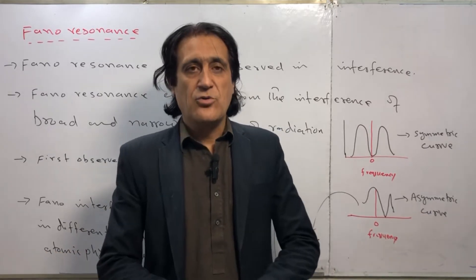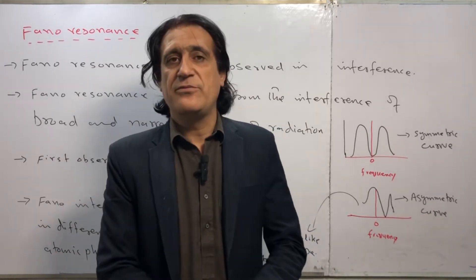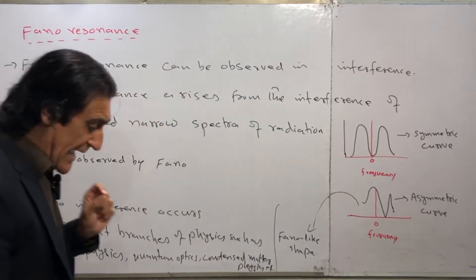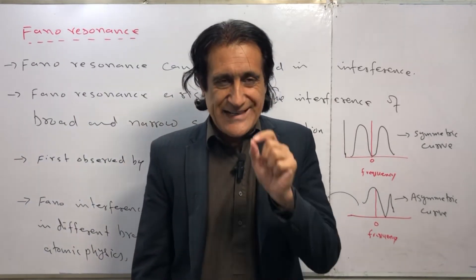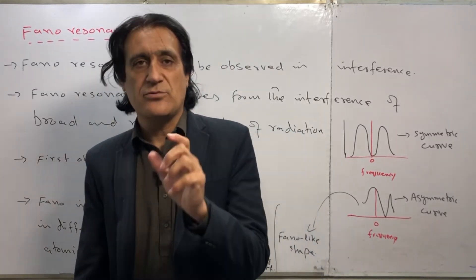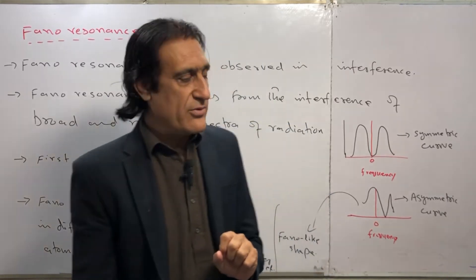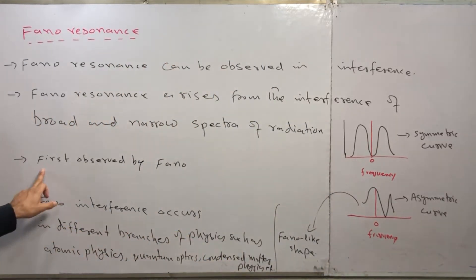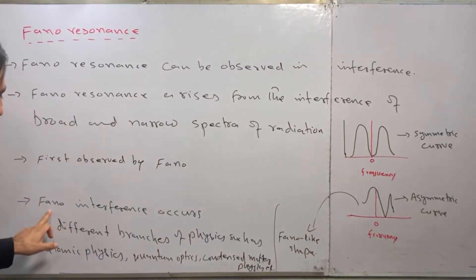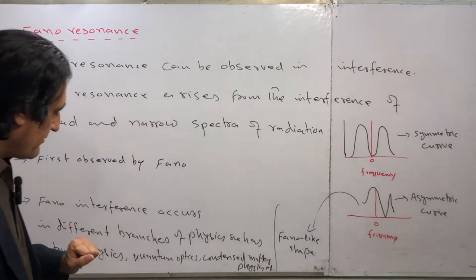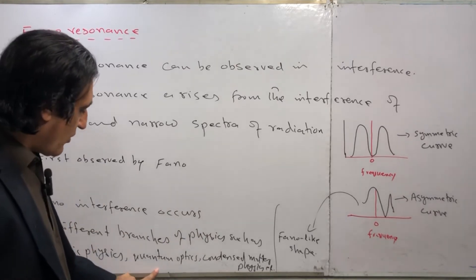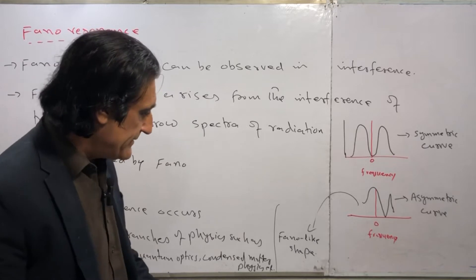When electrons collide with each other, we can understand Fano resonance. The resonance frequency is where the detuning is equal to zero — this is called the resonance frequency. Fano resonance was first observed by Fano, and Fano interference occurs in different branches of physics such as atomic physics, quantum optics, condensed matter physics, and so on.